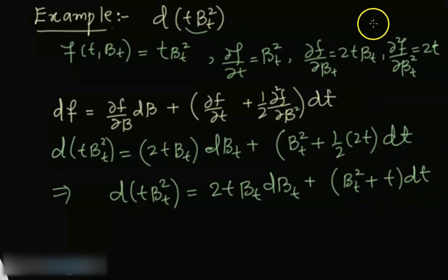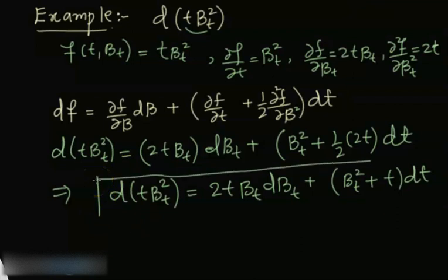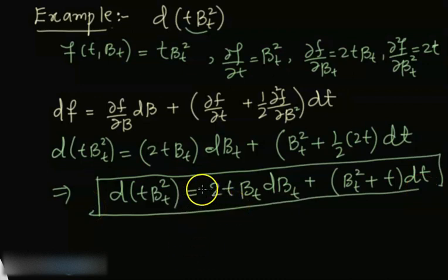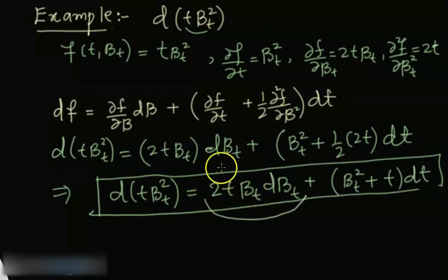So B_t here is nothing but the Brownian motion. From this differential, as we have already seen, we can calculate a particular Itô integral, which is going to be the Itô integral of this expression.